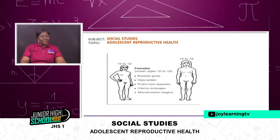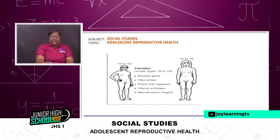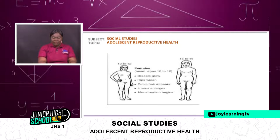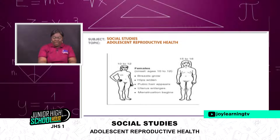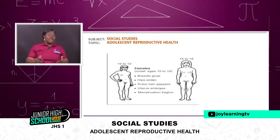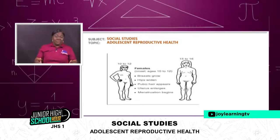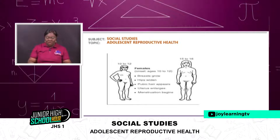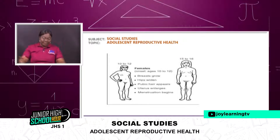There's another picture on your screen. You can see the girl who is ten years old. You can observe that breast grows, the hip widens, and pubic hair appears. The uterus enlarges — it's not visible on the outside but it is part of it. And then menstruation also begins between this time.